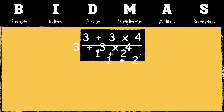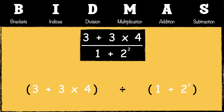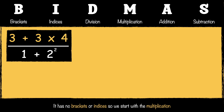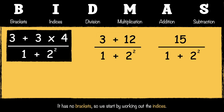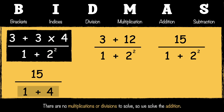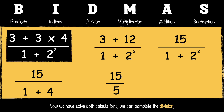This example has a division line, which acts like a grouping symbol similar to brackets, so we solve the calculations above and below the line first. On top: no brackets or indices, so we do multiplication first — 3 × 4 = 12, then addition — 3 + 12 = 15. On the bottom: 2² = 4, then 1 + 4 = 5. Now we do the division: 15 ÷ 5 = 3. So the answer is 3.